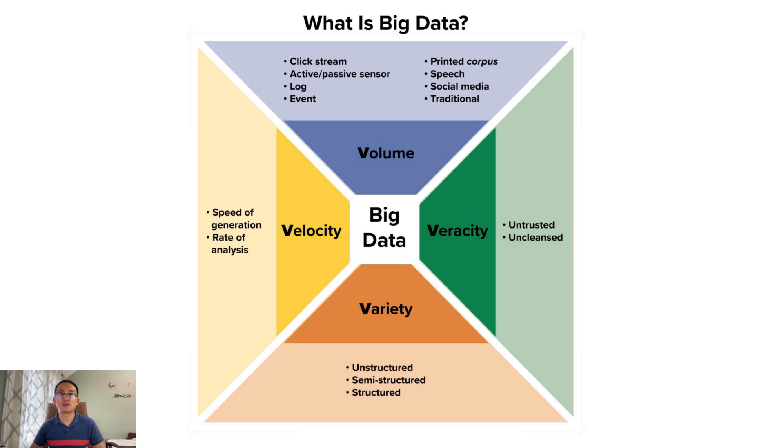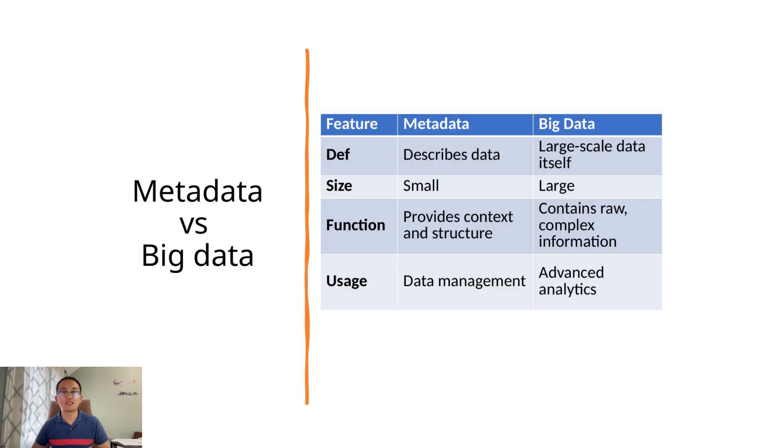For example, think about GPS apps on your phone or social media. These generate massive streams of unstructured data every second. That's big data. So how do metadata and big data compare? Metadata describes other data. It's small, clean, and structured. Big data is huge, complex, and often messy. Metadata helps us manage and understand data. Big data is used for deep analysis, like machine learning or business forecasting. They serve different purposes, but are both essential in modern analytics.